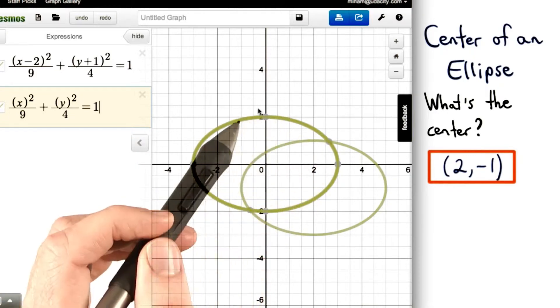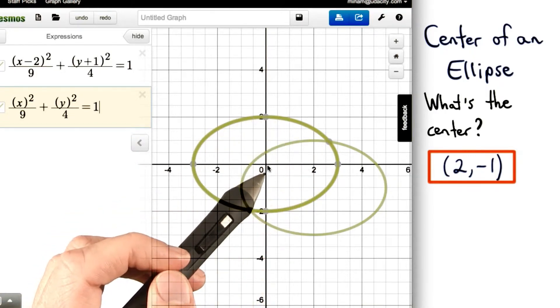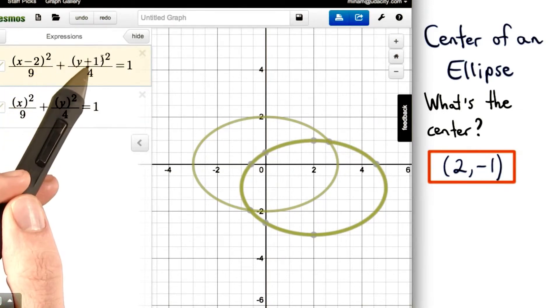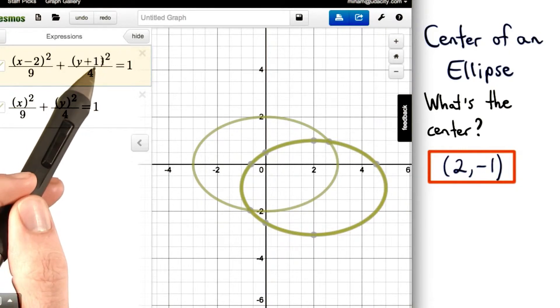So again, here was our original ellipse centered at the origin. That would be this equation. And then we shifted it 2 units to the right, since we subtracted 2. And then we shifted it 1 unit down, since we added 1 to y.